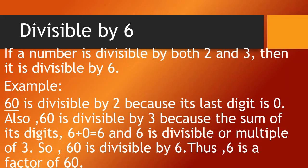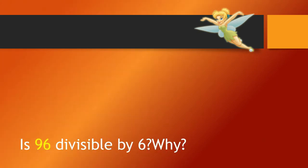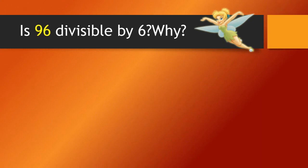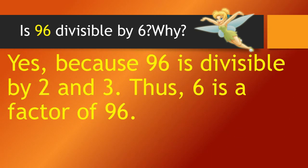Thus, 6 is a factor of 60. Is 96 divisible by 6? Why? Yes, because 96 is divisible by 2 — it ends with an even number, which is divisible by 2. And it is divisible by 3 because 9 plus 6 is 15, which is divisible by 3.